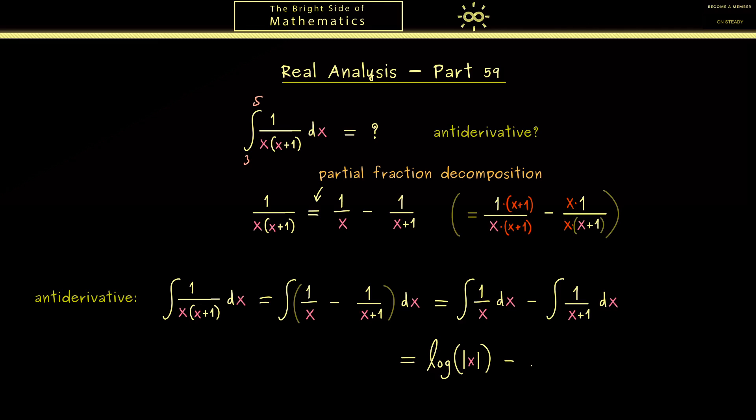And in the same way, the antiderivative of the second function is the logarithm of x plus 1. And also here when we include the absolute value we also have covered the case that the input x plus 1 is negative. So I think this is what you can easily check by just forming the derivative of these two functions.